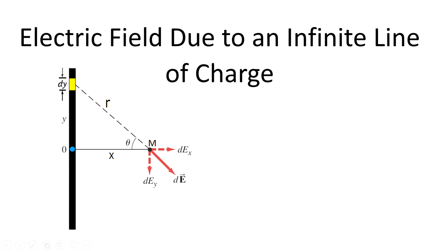Welcome to physics class. Today we are going to talk about electric field due to the infinite line of charge. What we mean by infinite line of charge is that when we have a wire and this wire is too long compared to the distance where we calculate this electric field. In this case we have the distance x, and this x is too short compared to the length of the wire.